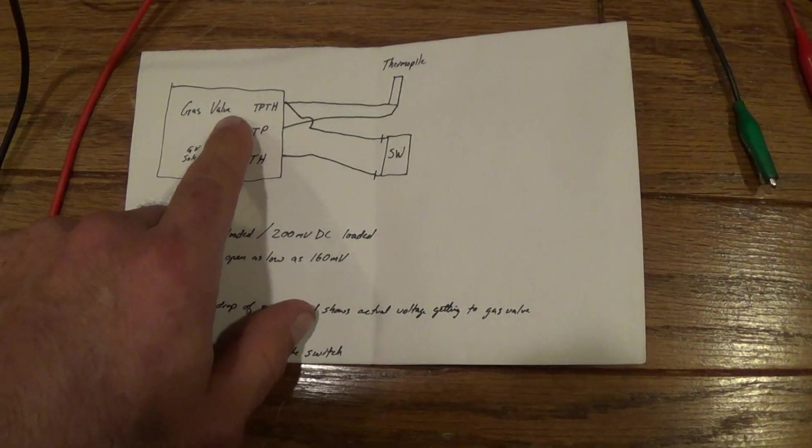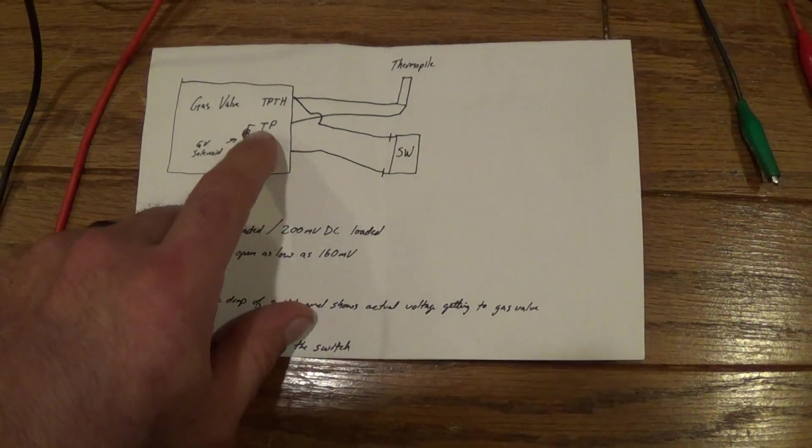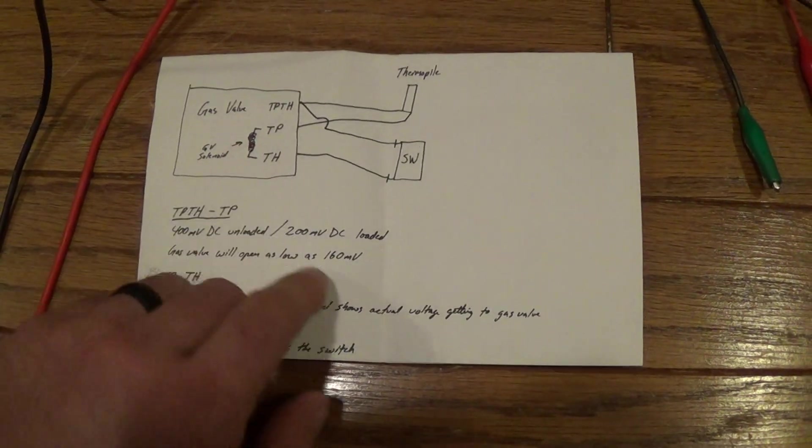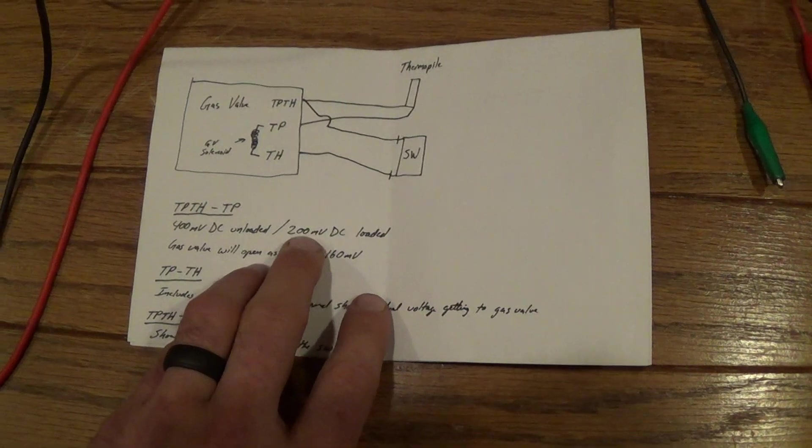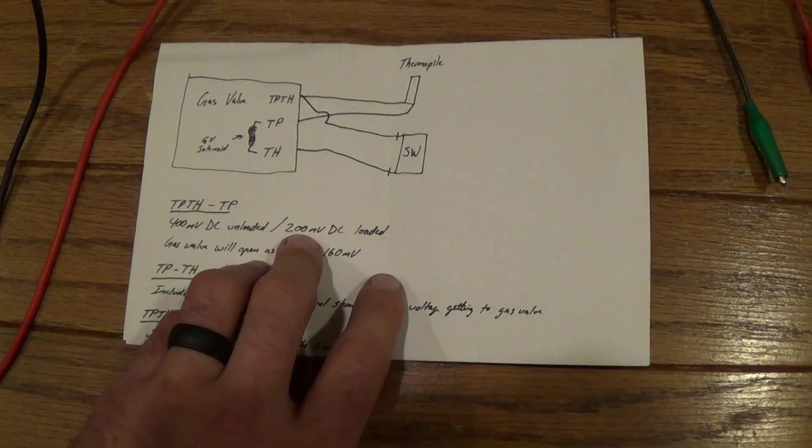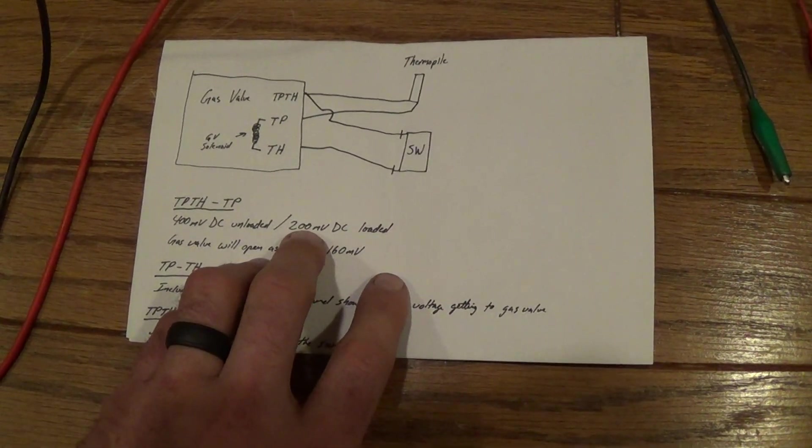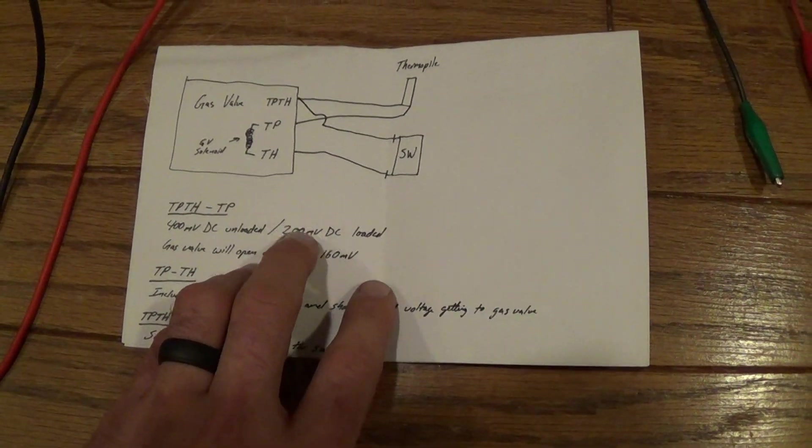When the gas valve is on and the thermopile is loaded down by the gas solenoid, you want to see somewhere around 200 millivolts DC. I have seen gas valves that can open as low as 160 millivolts DC, but any lower than that is going to start to give you problems.